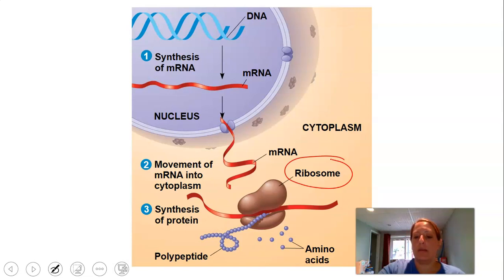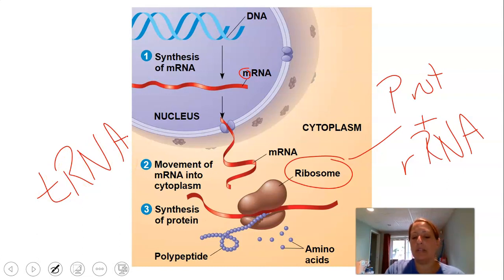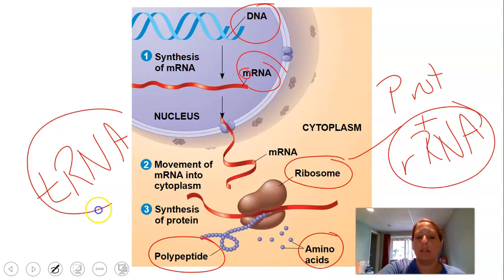The ribosome is a structure made of protein and rRNA (ribosomal RNA). With the help of tRNA (transfer RNA), the ribosome reads the mRNA and links amino acids together through dehydration synthesis. Eventually this produces a polypeptide that folds into a protein. So we have three types of RNA involved in protein synthesis: mRNA, rRNA, and tRNA.